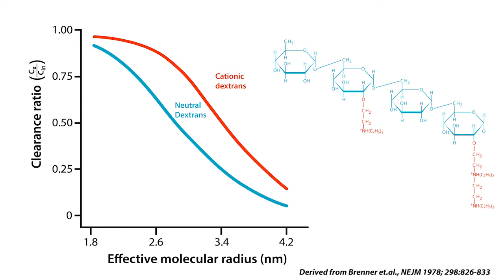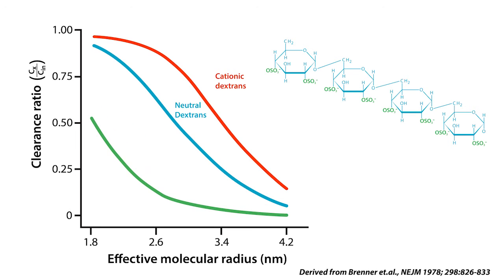there was an increase in perm selectivity or clearance of the positively charged dextran chains at all molecular sizes relative to neutral dextran. Conversely, when anionic or negative residues were added to the neutral dextran molecules, the perm selectivity of the negatively charged dextran decreased significantly at all molecular sizes. These results confirm that the filtration barrier restricts molecules based on size and charge, with a bias towards restricting negatively charged molecules more than neutral or positively charged molecules.